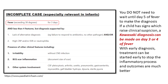It is important to note that Kawasaki disease is primarily a clinical diagnosis, and there is no specific diagnostic test for it. Laboratory tests and echocardiographic findings can aid in evaluating suspected cases. You do not need to wait until day 5 of fever to make the diagnosis — if a child has signs which raise clinical suspicion, a Kawasaki diagnosis can be made on day 3 or 4 of fever. With early diagnosis, treatment can be started early to stop the inflammatory process and outcomes are much better.